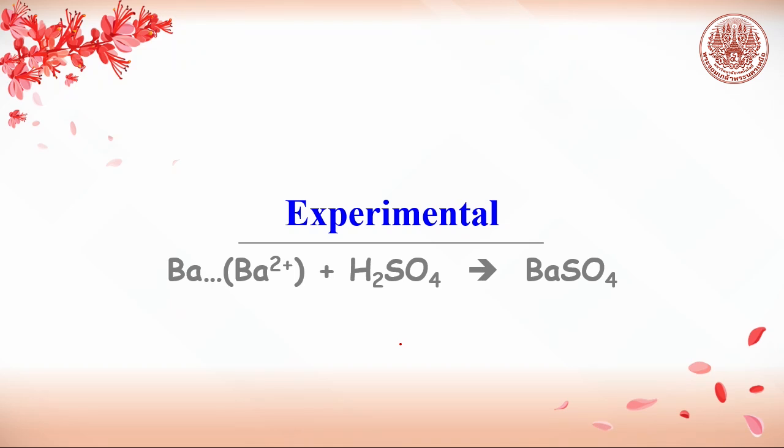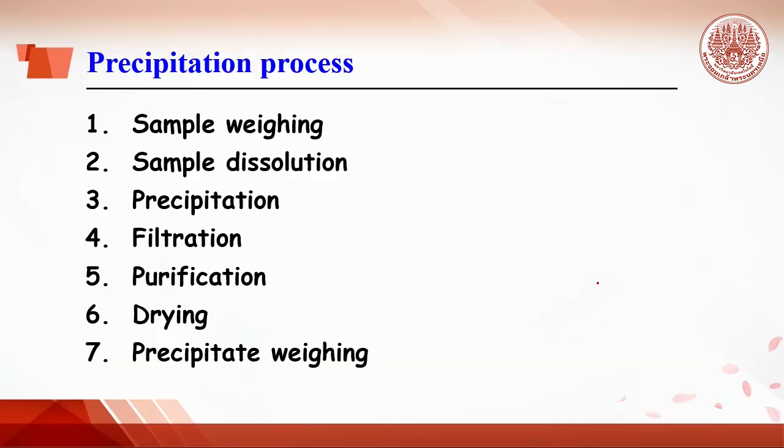In experiments, each group of students will get an ionic compound containing barium. Once it reacts with sulfuric acid, white precipitate of barium sulfate will be formed.